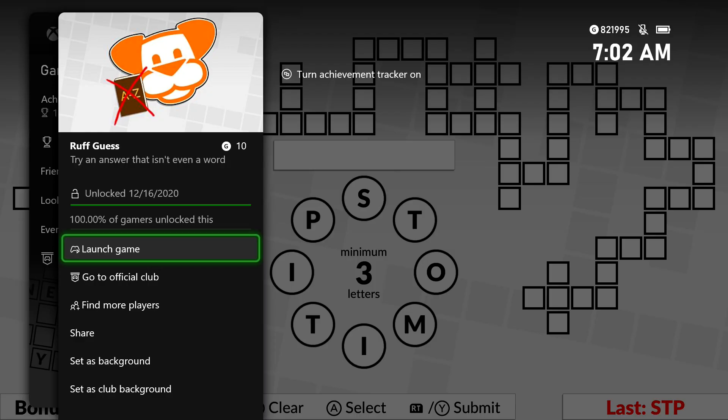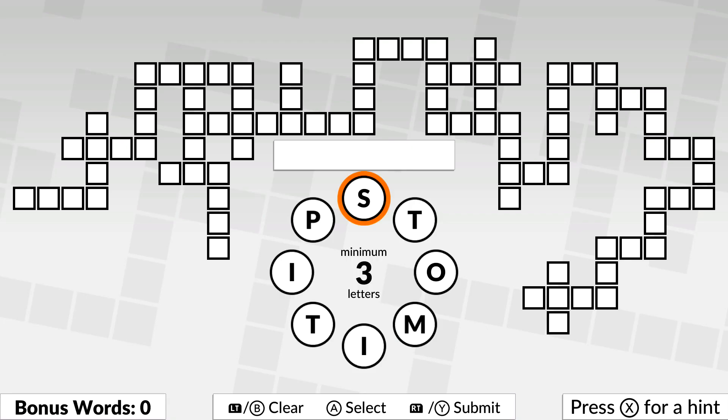This will give us an achievement for using a word that's not a word, which is going to be Rough Guess. That's going to be for 10 gamer score.